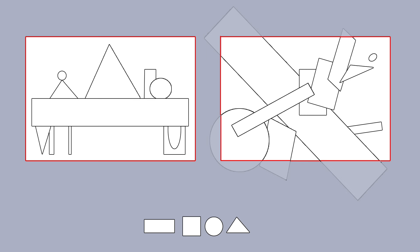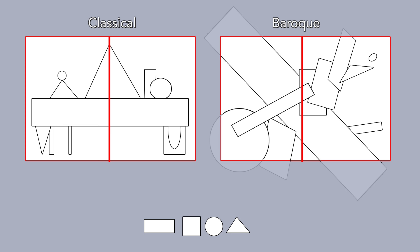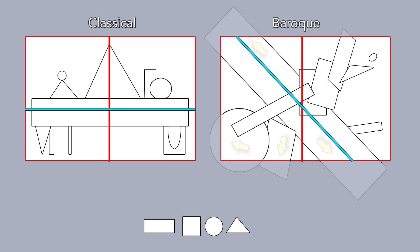What he refers to as closed versus open, I call classical versus Baroque. Three key aspects that differ in these two are use of symmetry, the primary visual movement, and whether the frame crops any of the shapes in a way that brings attention.